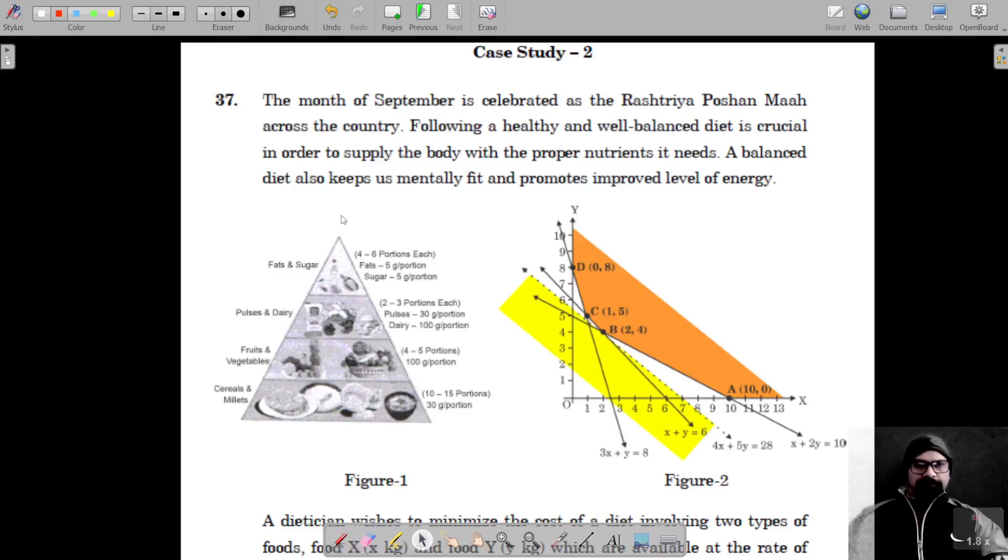Okay, for question number 37, it's given the month of September is celebrated as the Rashtriya Poshan Maah across the country. Following a healthy and well-balanced diet is crucial to maintain the supply of the body with proper nutrients. A balanced diet also keeps us mentally fit and promotes improved level of energy.